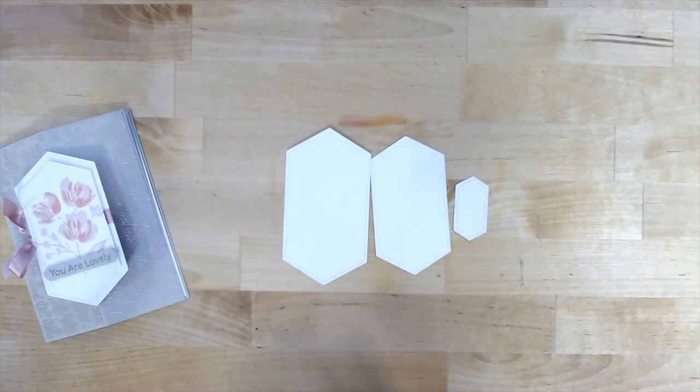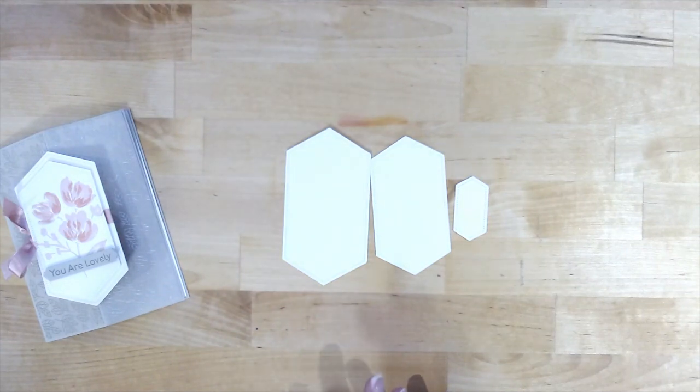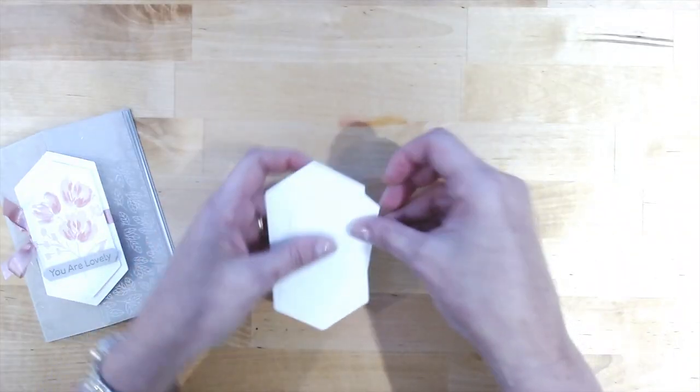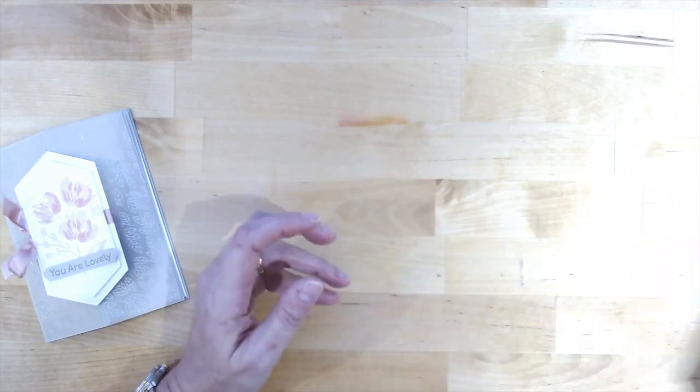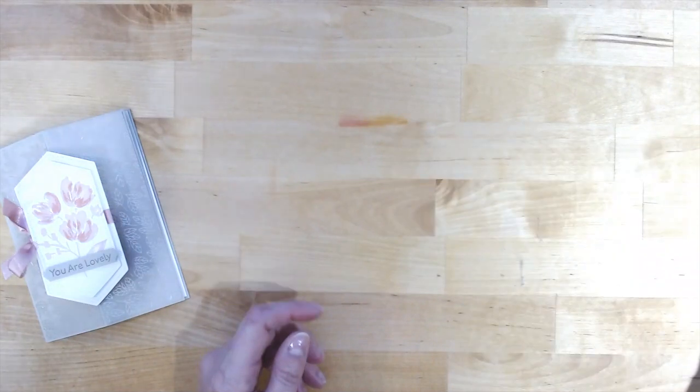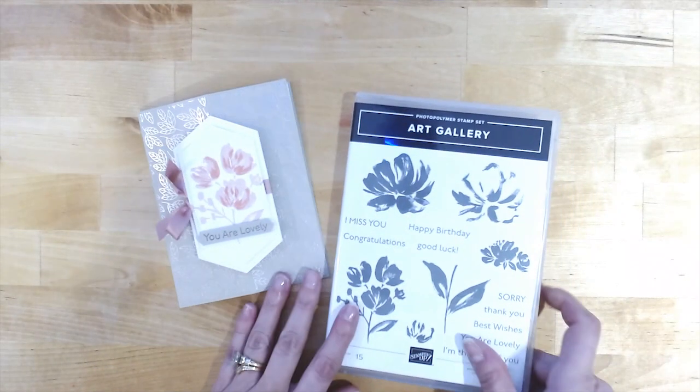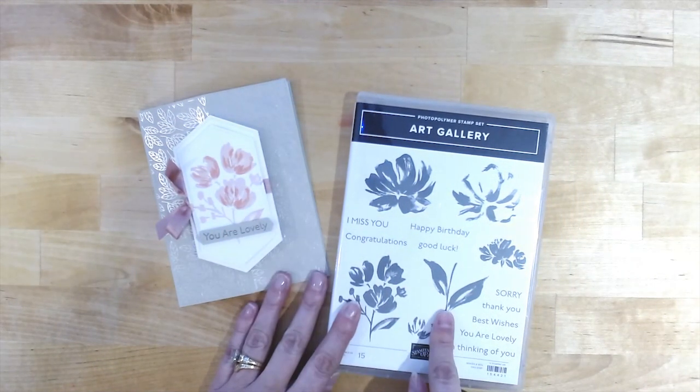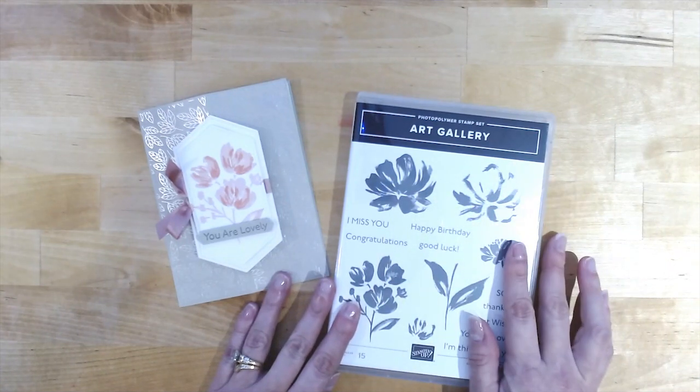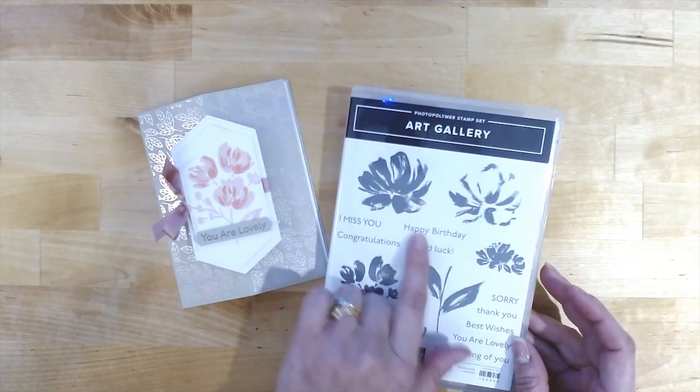And I'm using thick cardstock. You could use regular cardstock, but I find that it holds up a little bit better with what I'm doing if I use a thicker cardstock. You're going to also want a couple scraps of Sahara sand cardstock for punching. We will be featuring the art gallery stamp set to decorate our card today. This has beautiful floral images that you can use to create a variety of cards. It's got a lot of nice little sentiments in it as well.